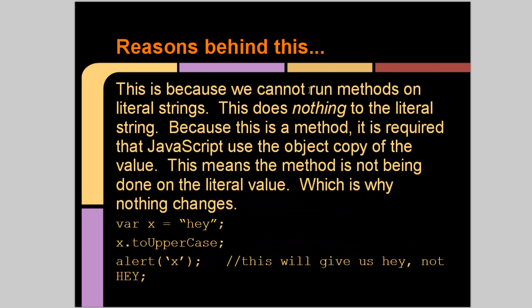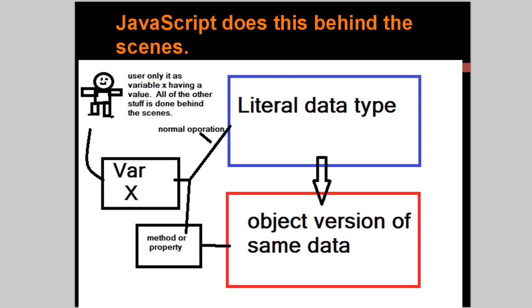The reason behind this is because we cannot run methods on literal strings because they're not objects. This does nothing to the literal string. Because this is a method, it is required that JavaScript uses the object copy of the value. This means the method is not being done on the literal value, which is why nothing changes. So if we look back at this picture, you can see we have a variable. We call a method to uppercase. It takes the data from the object version of the same data. So this value up here does not get affected or nothing is even done with this literal value up here.